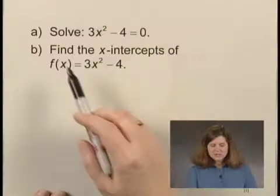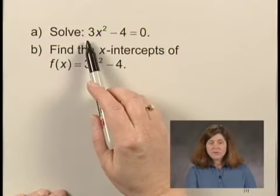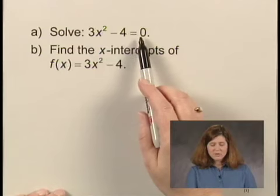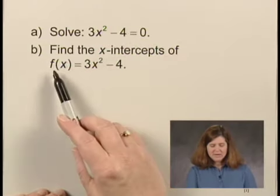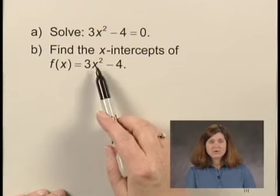We're going to be looking at a quadratic equation and a quadratic function. We're asked to first solve the quadratic equation 3x² - 4 = 0, and then find the x-intercepts of f(x) = 3x² - 4.